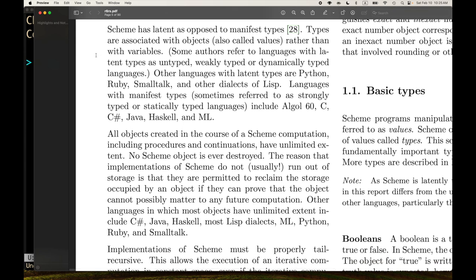Scheme has latent as opposed to manifest typing. So this is where people talk about dynamic typing and static typing. The report uses latent versus manifest. Types are associated with objects, also called values, rather than with variables. Some authors refer to languages with latent types as untyped, weakly typed, or dynamically typed languages. Now, I certainly wouldn't say that Scheme is untyped. There are untyped languages, which is to say you've got a collection of bits and a string and manipulate them as you please. It's like what happens in a traditional CPU where you can take a bit string in a register and treat it any way you want. So I wouldn't say that Scheme is untyped. But I've heard people claim that. Weakly typed, dynamically typed. Usually you hear people say dynamically typed.